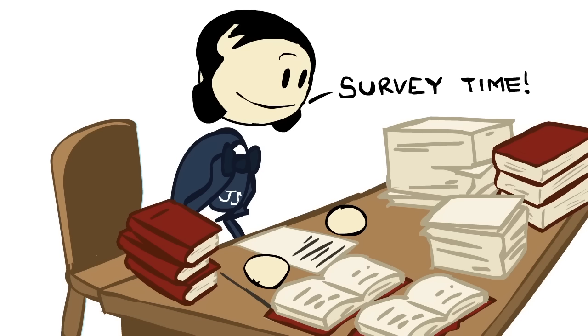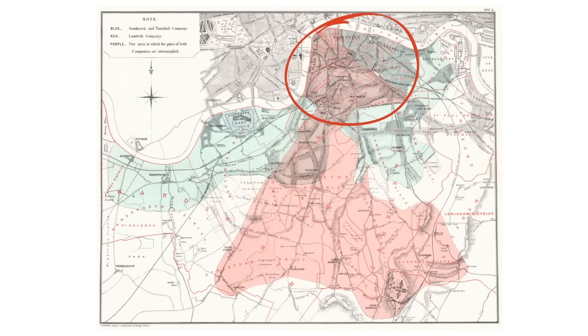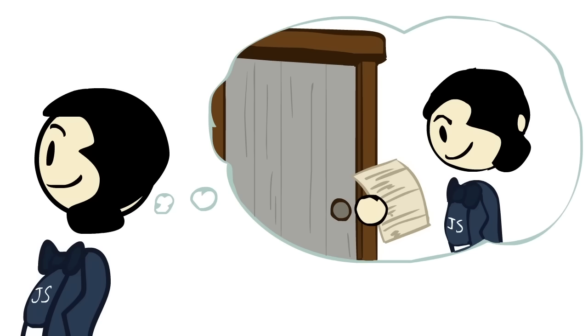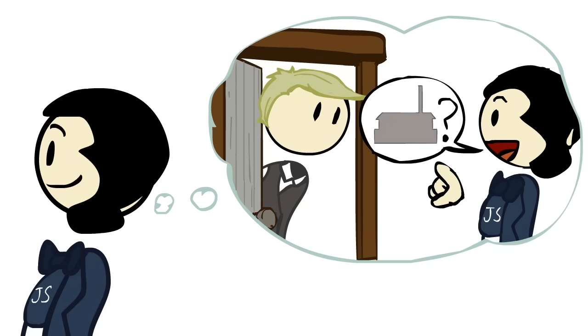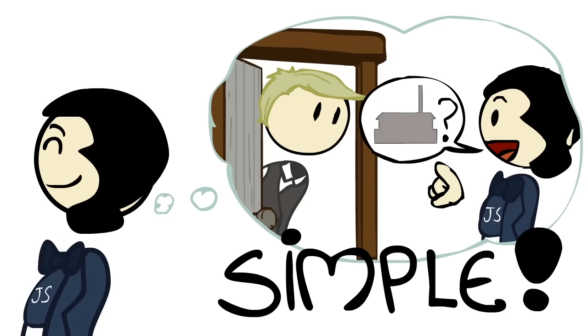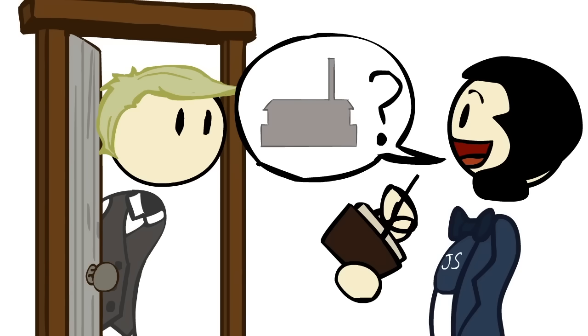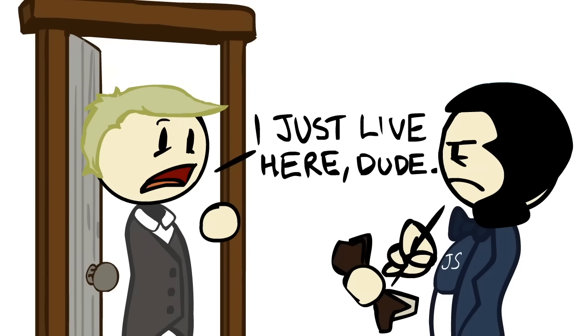So Snow began to canvas two of London's districts that had recently been hit hard by the epidemic. At first he thought it would be simple. He would go door to door, asking if anybody at that residence had been afflicted, and what water company they used. Simple. But nothing's ever that simple. Most residents didn't know what company they used. They were just tenants, they hadn't contracted the water for their place.